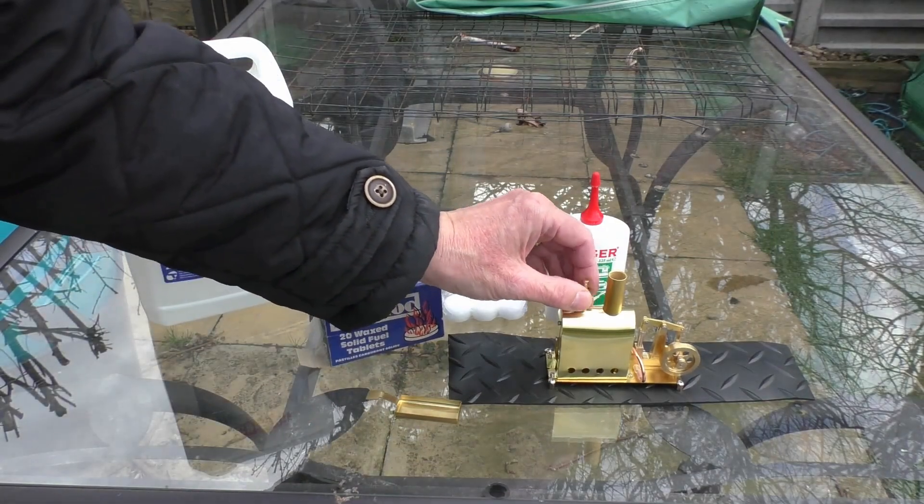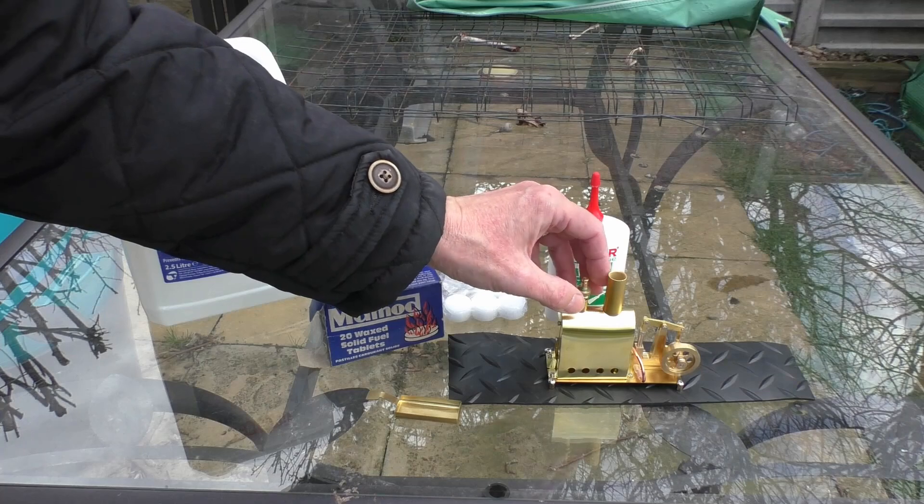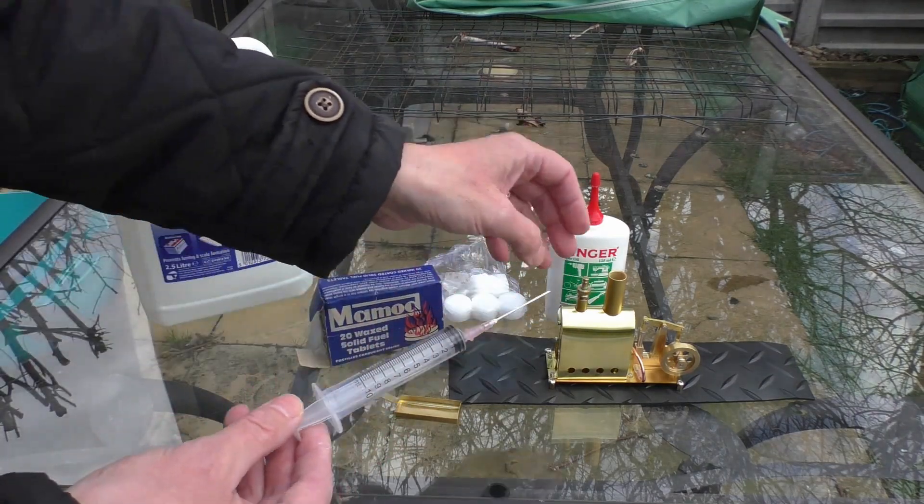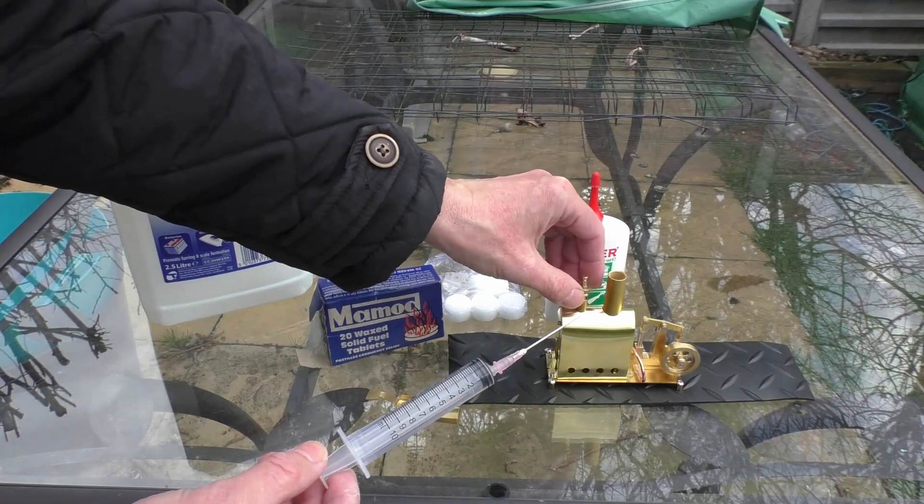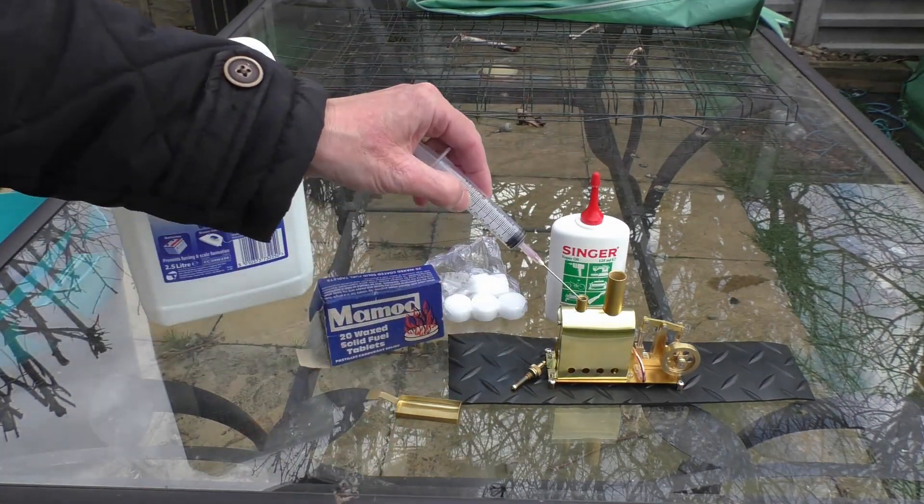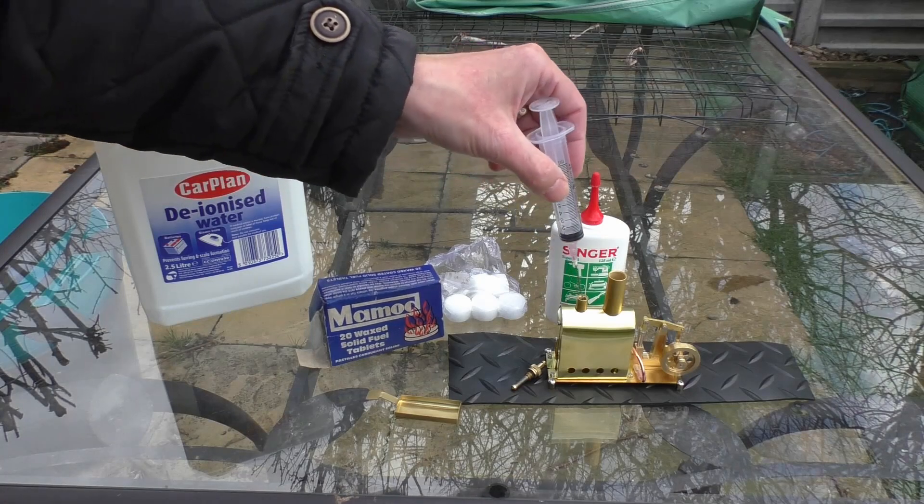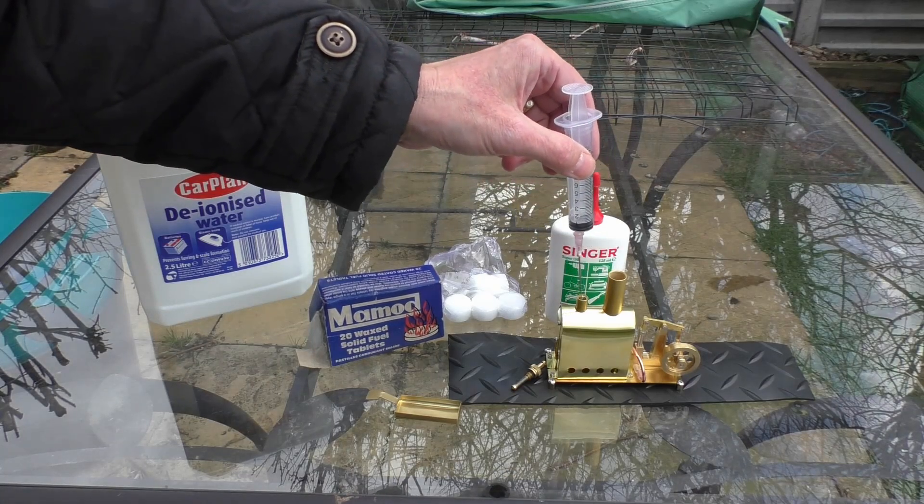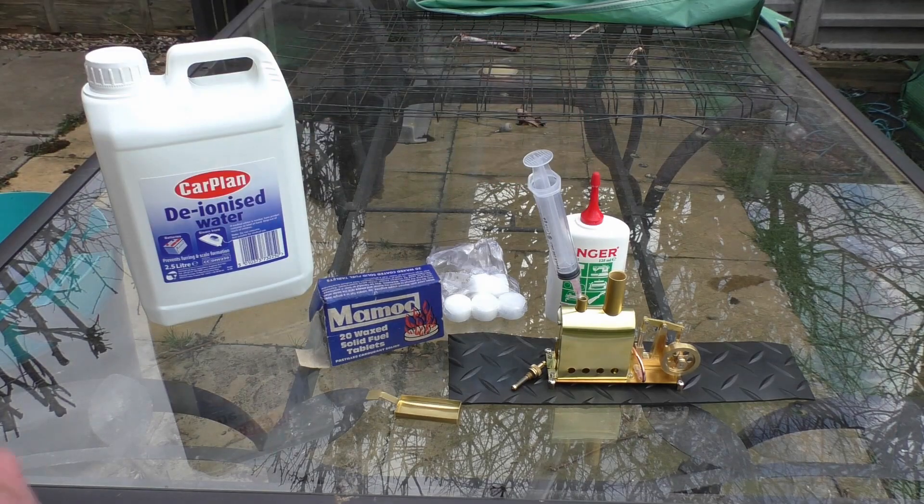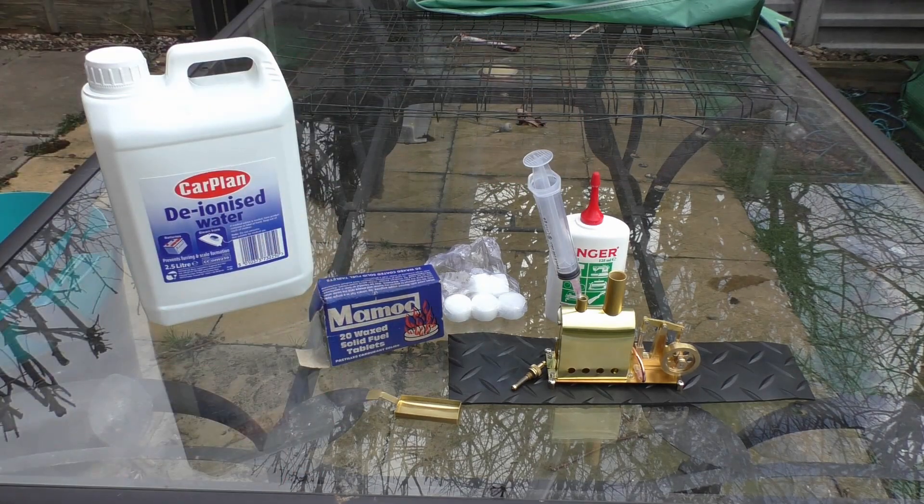Right, so there we go. When it comes to filling the boiler, as I mentioned, I think they recommend about 12 milliliters of water, so it's very, very small. I'm going to use a syringe so I don't overfill it. I might put in just slightly more than that. Otherwise you'd have to use a funnel or something. It's quite a small aperture, so a syringe is ideal. Right, I'll speed it all up and then we can run it for the first time.